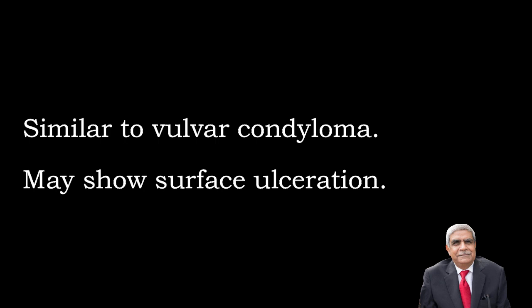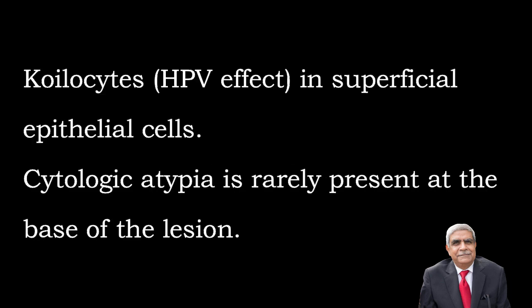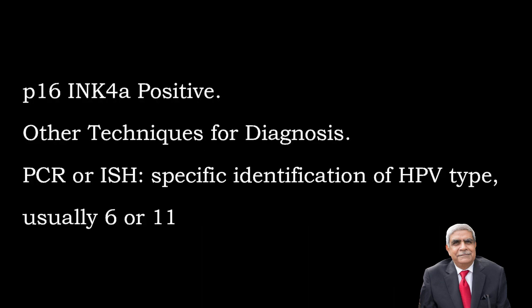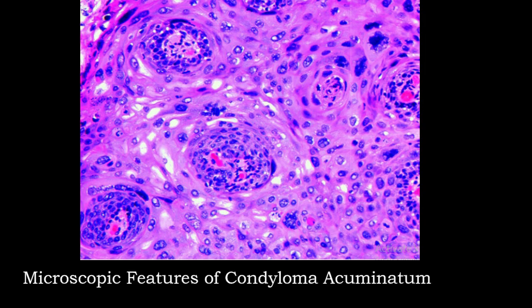An important viva question: which is the more common site for condyloma acuminatum — vulva or cervix? The answer is vulva. They may show surface ulceration. Microscopic appearances: koilocytes in the superficial epithelial cells; cytological atypia is rarely present at the base of the lesion. Immunohistochemistry: p16 INK4A positive. Other techniques include PCR for specific identification of human papillomavirus type, usually 6 or 11. The microphotograph shows thickened epithelium with irregular cytoplasmic halos and enlarged binucleated pyknotic nuclei.